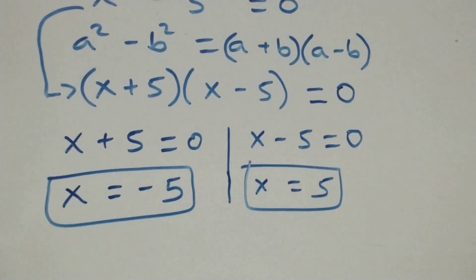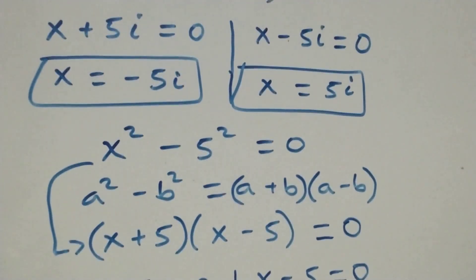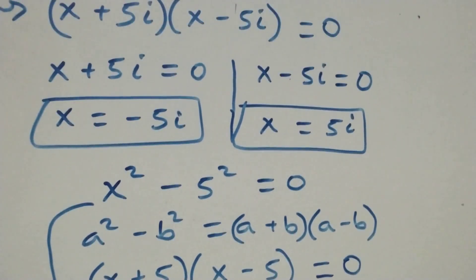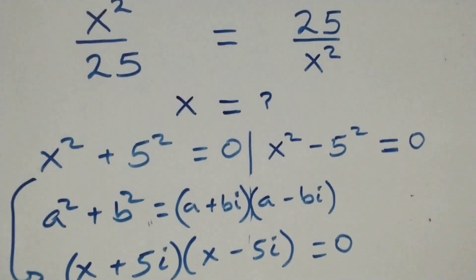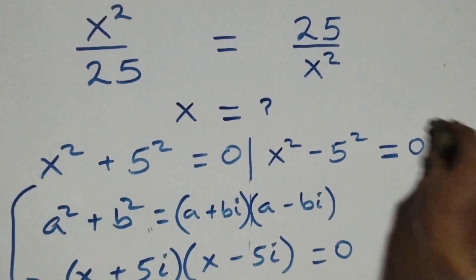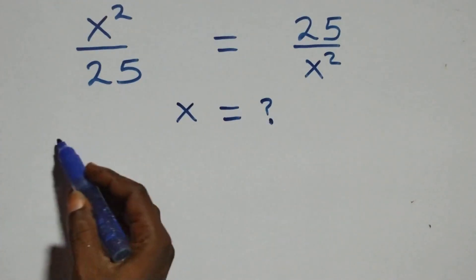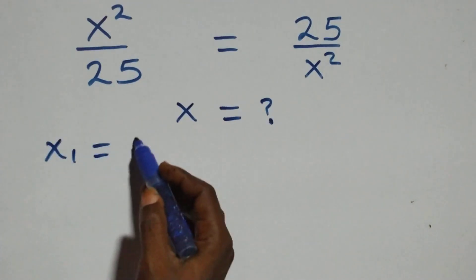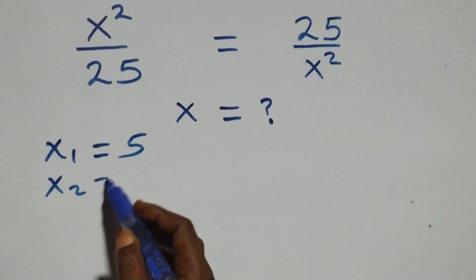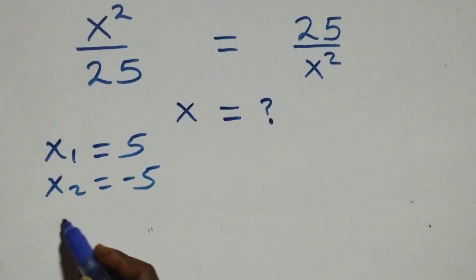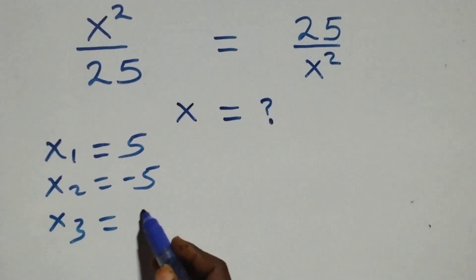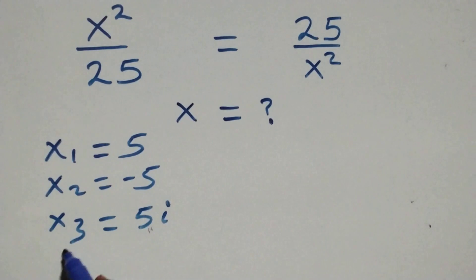Making four solutions together: two real and two complex solutions. So x1 equals to 5, x2 equals to minus 5 — two real solutions — and x3 equals to 5i, and x4 equals to minus 5i — two complex solutions.